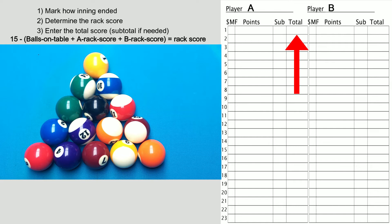Okay, let's start a game. The first shot of the game is a safety. Step 1: Mark how the inning ended, a safety. Step 2 is easy, zero points were scored. Step 3: The total score for player A is zero.